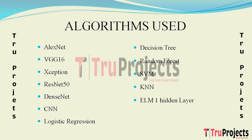Extreme Learning Machine (ELM) with one hidden layer is a neural network whose hidden layer weights are assigned randomly, eliminating the need for iterative tuning. This reduces training complexity, making ELM efficient for feature learning in image data. ELM with two hidden layers extends this by introducing an additional layer for feature learning, allowing the model to capture more intricate patterns. The two hidden layers provide increased capacity for representation learning, suitable for complex, multi-level features.